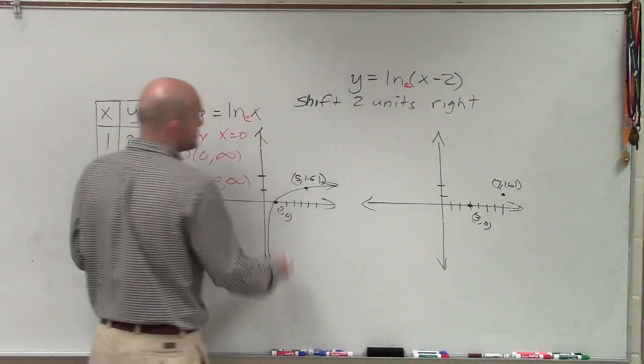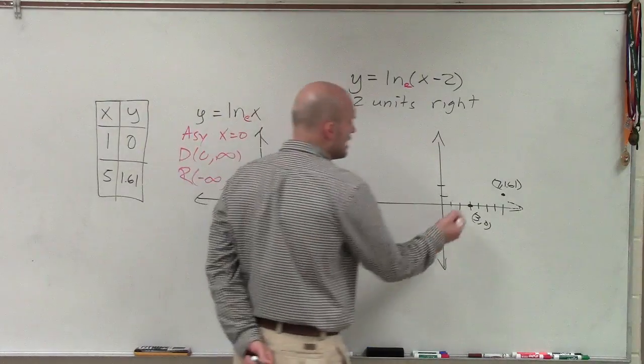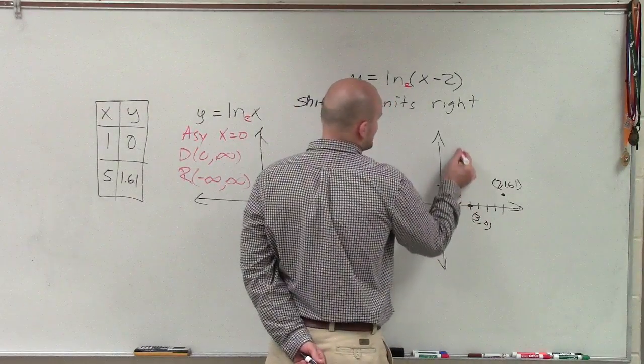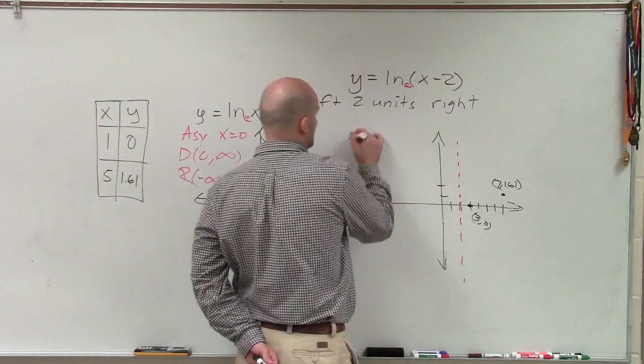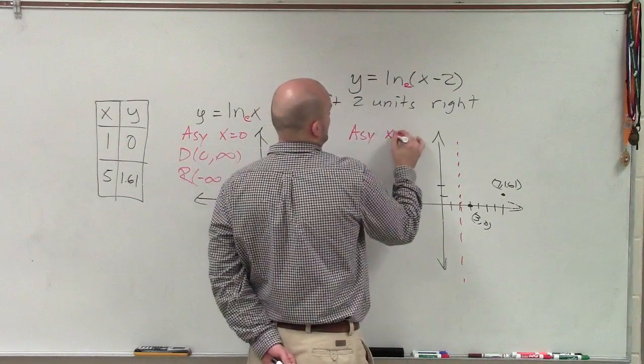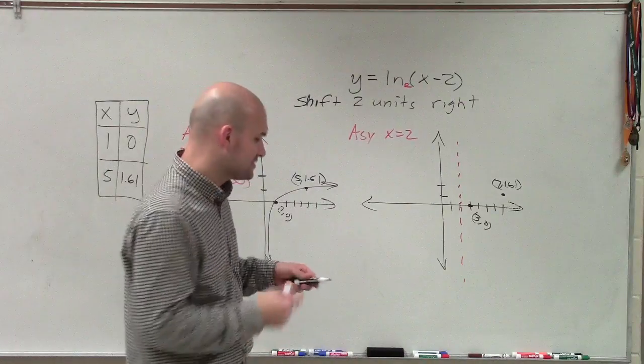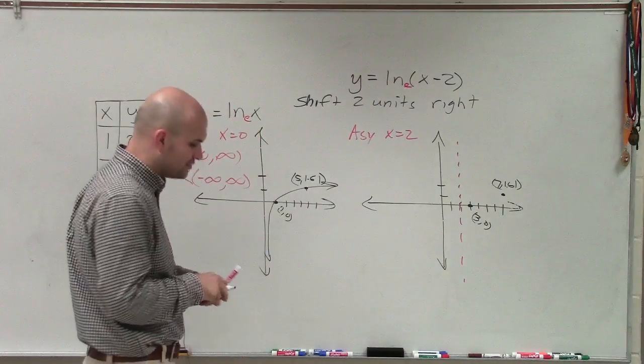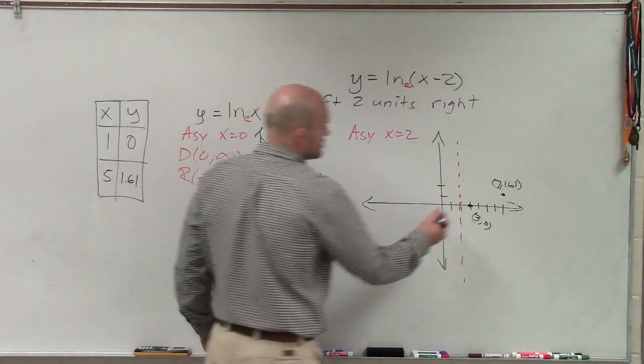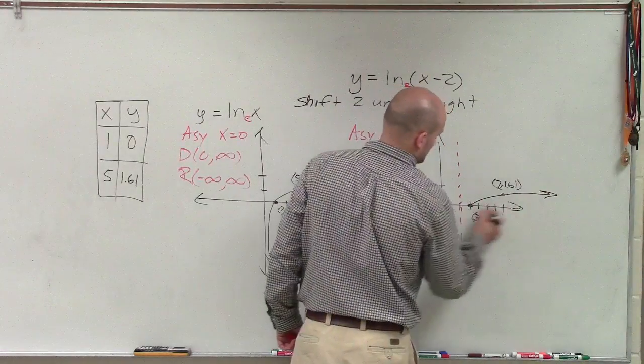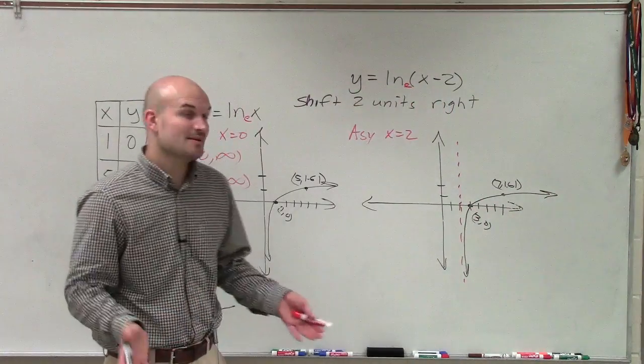Well now, I've shifted the graph two units to the right. So now my asymptote has changed to x equals 2. And remember, the asymptote is where your graph is going to approach. So my graph is going to be approaching 2, but it's not going to cross it or touch it. So therefore, the graph is going to look something like this. So there you go, ladies and gentlemen.